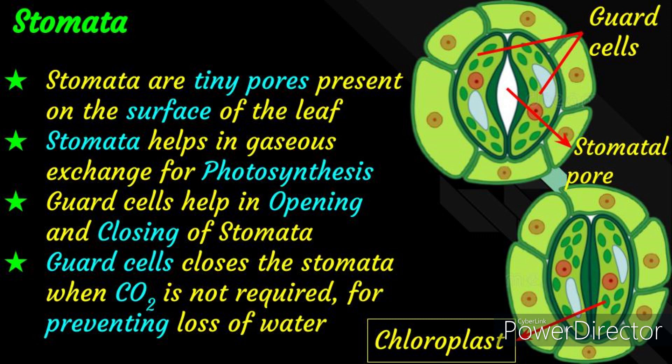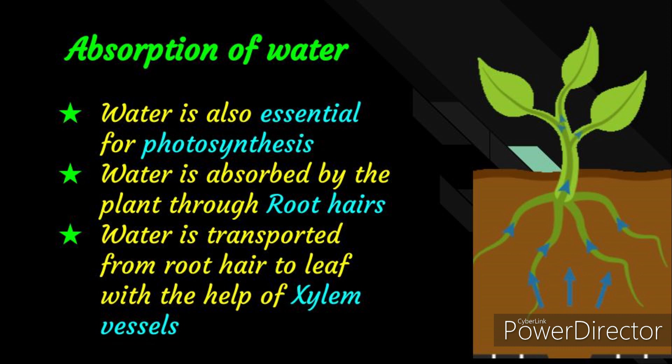Now let us learn how water is absorbed for photosynthesis. Water is also used in photosynthesis. Plants absorb water from the soil through their root system. Water and minerals are absorbed by the root hairs present near the end of the roots. The water absorbed is transported to the leaves with the help of xylem vessels.